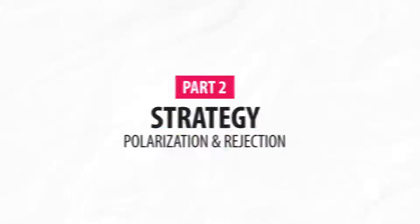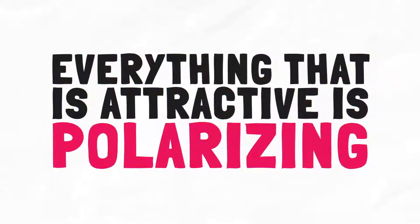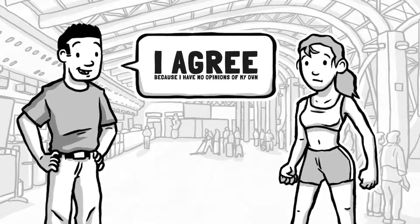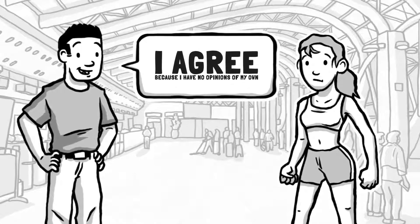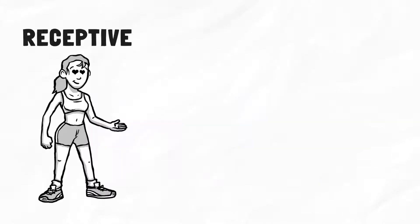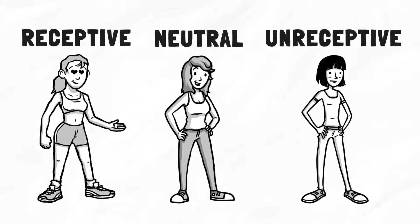Part 2. Strategy. Polarization. Everything that is attractive is polarizing. To polarize is to make a stand in one direction. If you agree with everything a girl says to you because you want her to like you, then you are not making a stand for yourself. There are three categories of women. Receptive, neutral, and unreceptive.